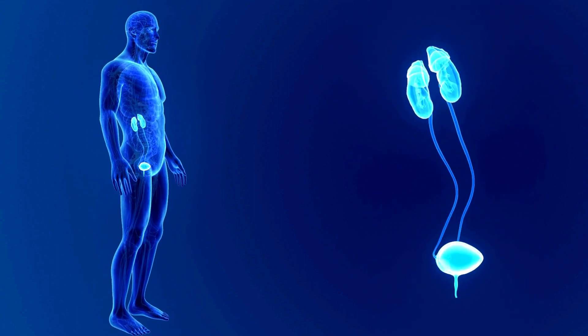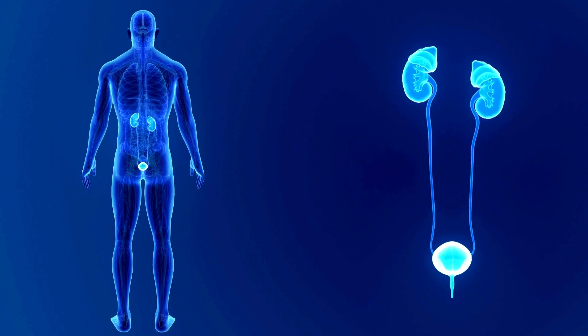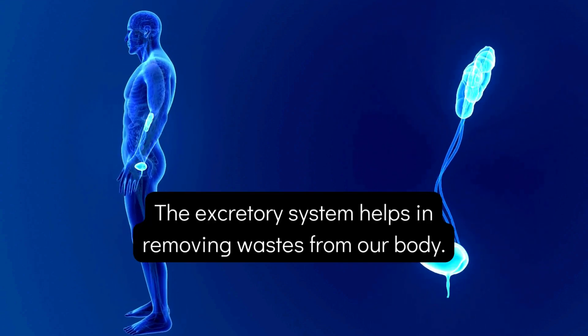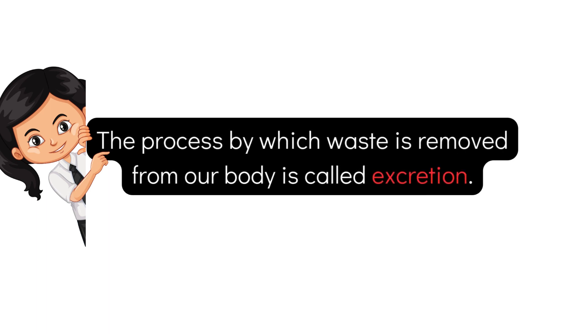Here you can see the location of our excretory system inside our body. The excretory system helps in removing wastes from our body. The process by which waste is removed from our body is called excretion.